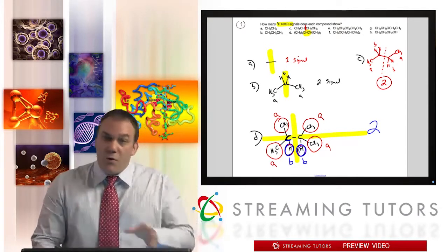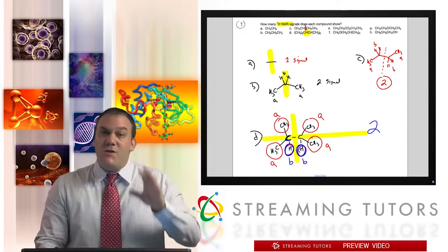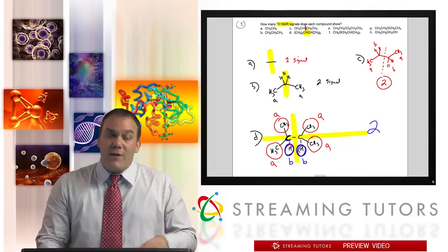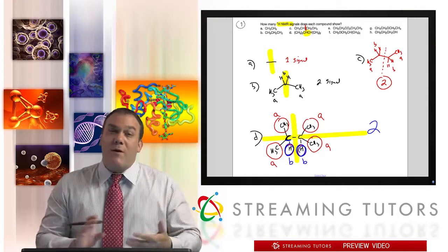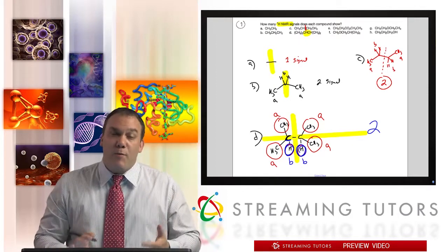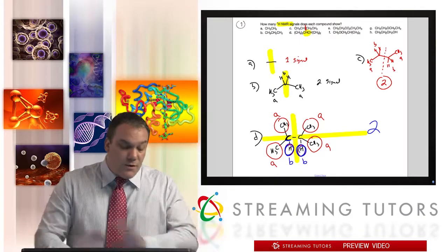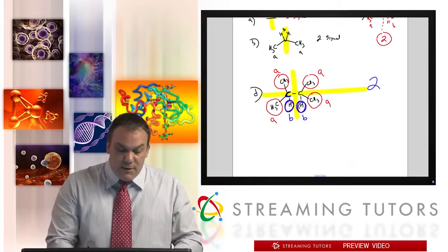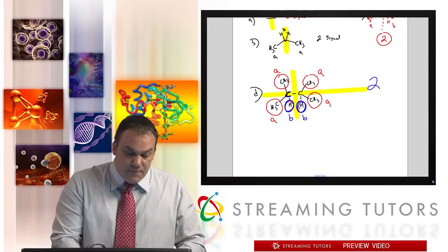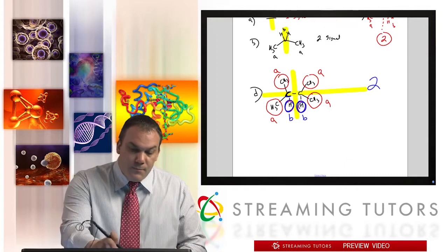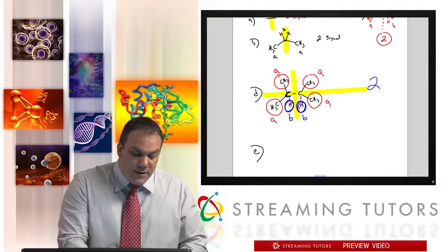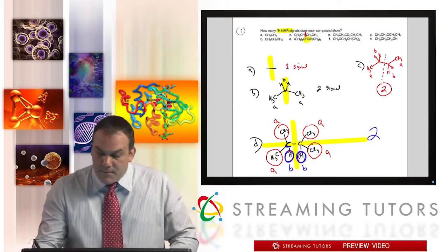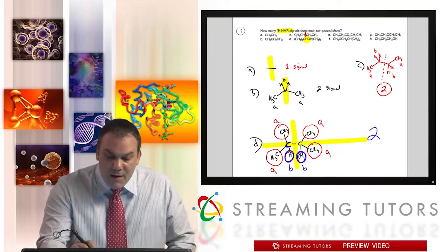Finally, this H and that H in the middle — there's a vertical plane of symmetry, so if this is B, this is also B. That gives us two readings total for D. And again, there's no chirality and no cis/trans, so we don't have to worry about diastereotopic H's.